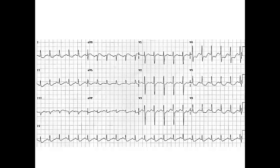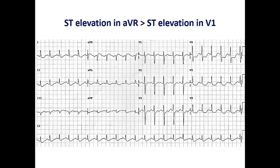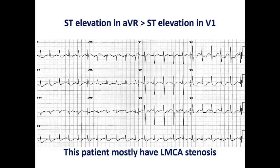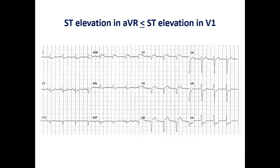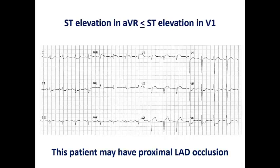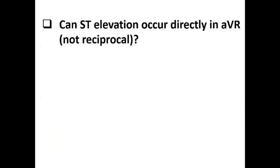There is an important feature in these ECGs: which is higher — ST elevation in AVR or V1? In one example, ST elevation is higher in AVR than V1, suggesting the culprit is most likely left main coronary artery. In another, ST elevation in AVR is less than or nearly equal to V1, suggesting the culprit may be proximal or osteal LAD occlusion. So the difference in magnitude between ST elevation in AVR versus V1 can help predict the culprit vessel.